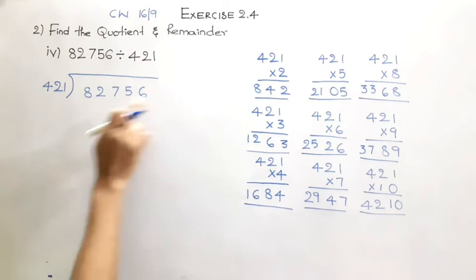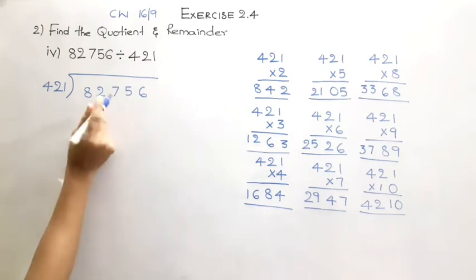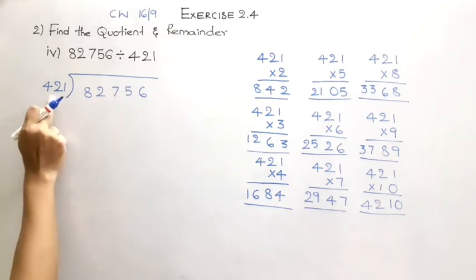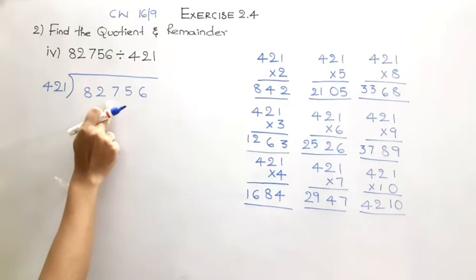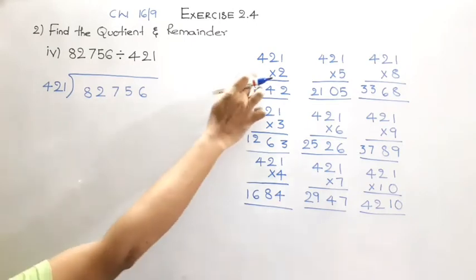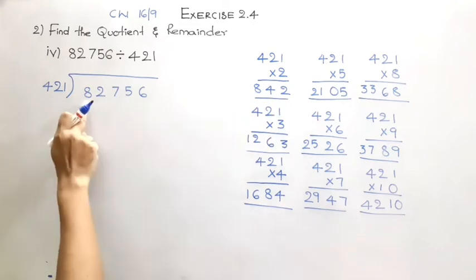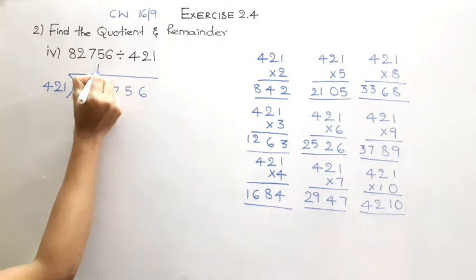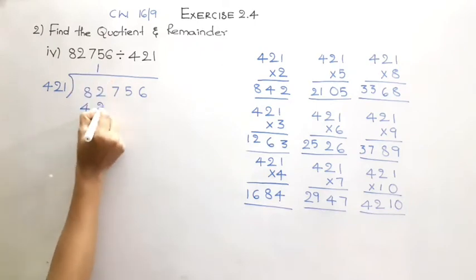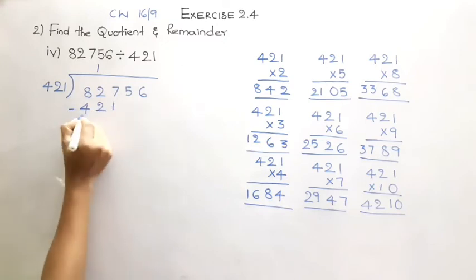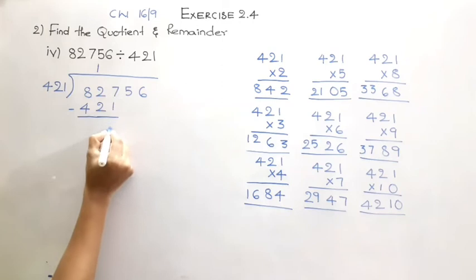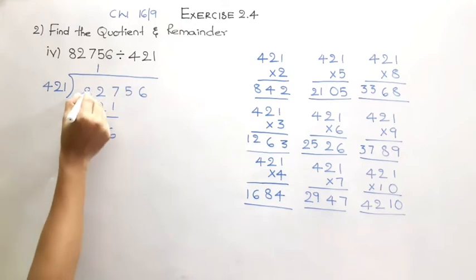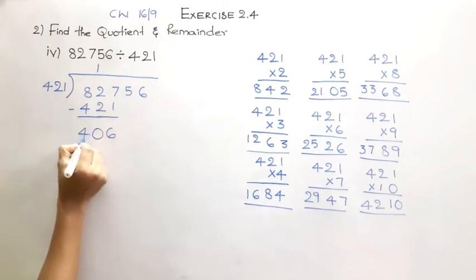By using the table, the first three digits of the dividend is 827, which is greater than the divisor 421. So you can directly take the first three digits for the division. 421 times 2 is 842, which is greater than 827, so we'll go with one time. 421 ones are 421. Upon subtraction we get: 7 minus 1 is 6, 2 minus 2 is 0, 8 minus 4 is 4.